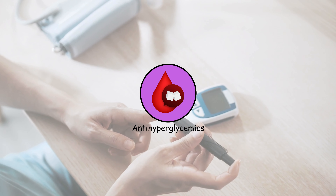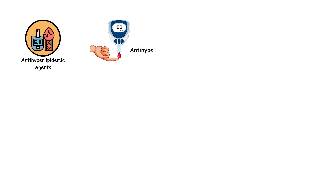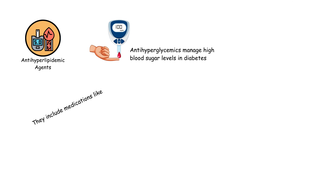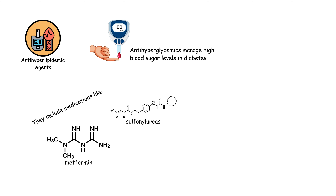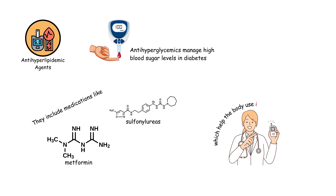Antihyperglycemics manage high blood sugar levels in diabetes. They include medications like metformin and sulfonylureas, which help the body use insulin more effectively or increase insulin production.